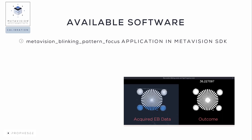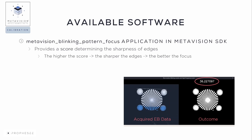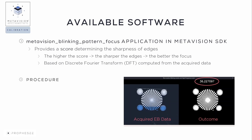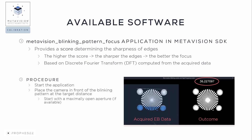The MetaVision Intelligence Suite provides an application called the MetaVision Blinking Pattern Focus that helps to adjust the focus for an event-based camera. The application provides a score determining the sharpness of the edges — the higher the score, the sharper the edges, and the better the focus. The score is based on a discrete Fourier transform computed from the acquired data transformed into an image. To use this application, simply start it, place the camera in front of the blinking pattern at the target distance, and adjust the focus ring and the aperture, if available, to get the highest possible score. The application is installed with the MetaVision SDK in the bin folder, and its source code is installed in the share folder. For more details, check out the documentation page linked in the description below.